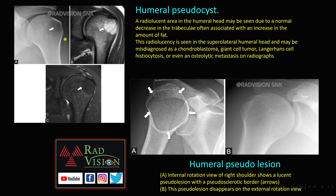There is a lucent area in the humeral head which is normally devoid of trabeculae with an increased fat component. This is normally seen in the superolateral aspect of the humeral head — called the humeral pseudocyst. This should not be confused with tumor. Also, internal rotation of the humerus can show a lucent pseudo-lesion with pseudo-sclerotic borders, which completely disappears on external rotation. Both humeral pseudocyst and humeral pseudo-lesion can mimic tumors and should not be misdiagnosed.